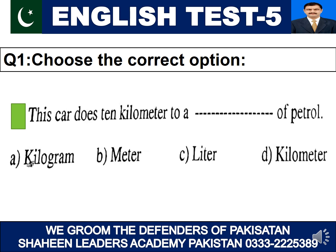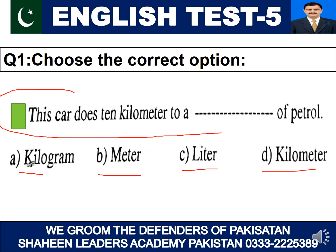This is question number one. We will start — choose the correct option: option A, option B, C, or D. Question number one: 'This car does ten kilometers to a ___ of petrol.'